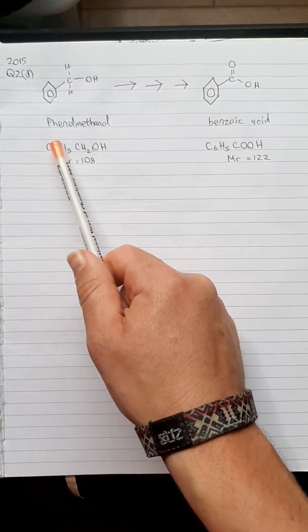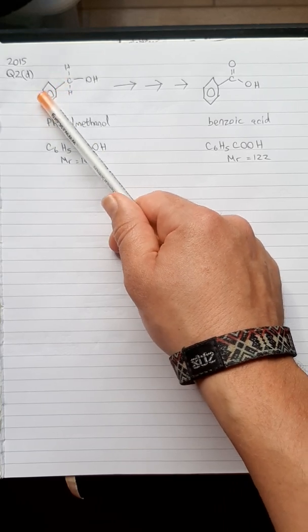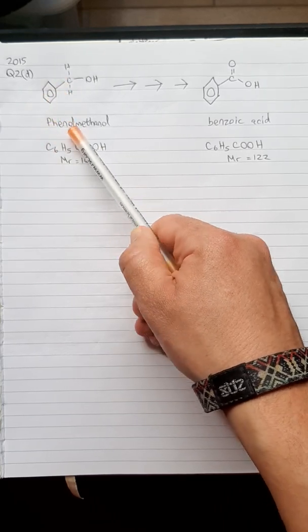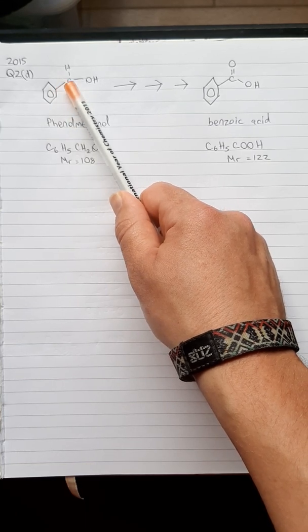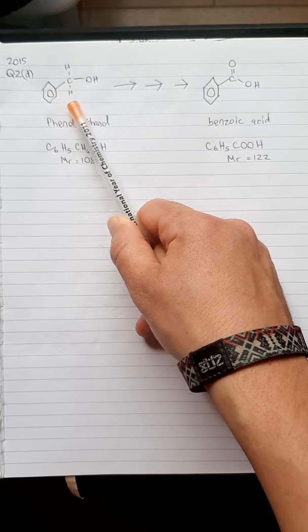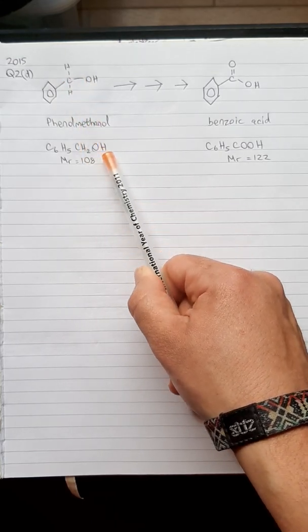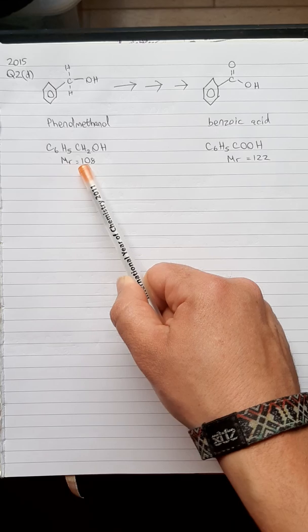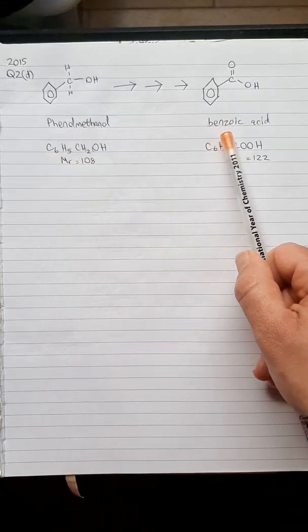Looking at the benzene ring, six carbons in the ring and there are five hydrogens because this carbon has an extra bond to it so it doesn't have space for the hydrogen. Then the CH2 and the OH, so that adds up to 108 when you work out the MR.